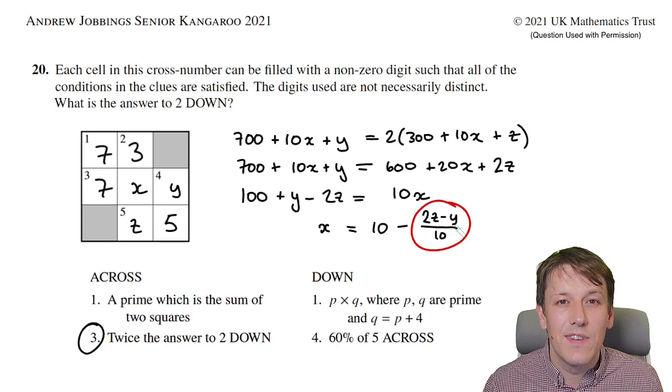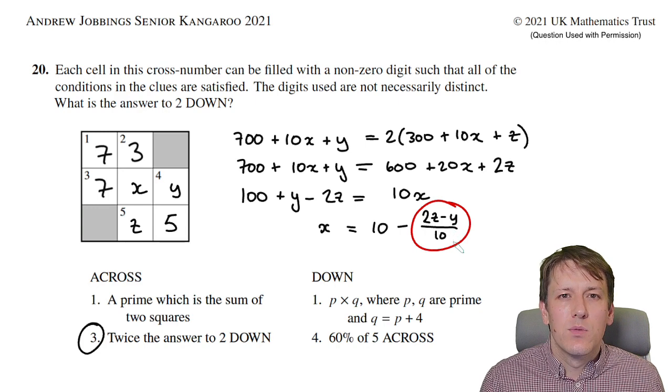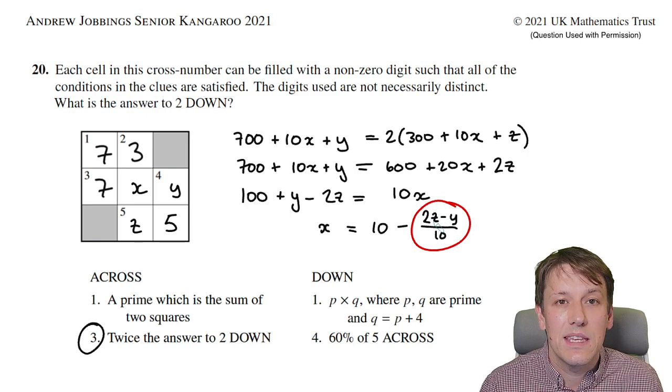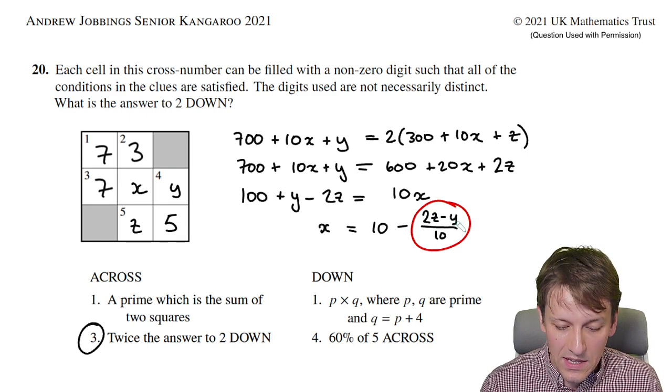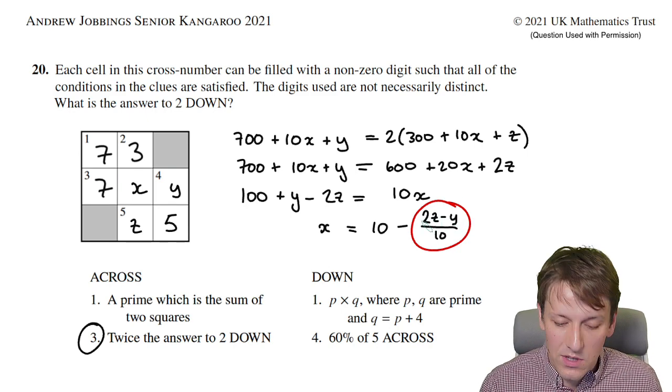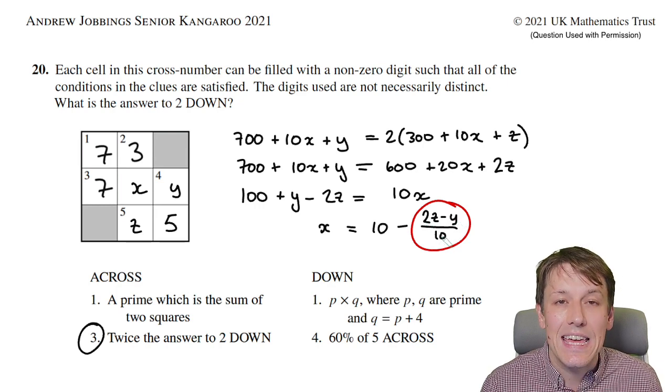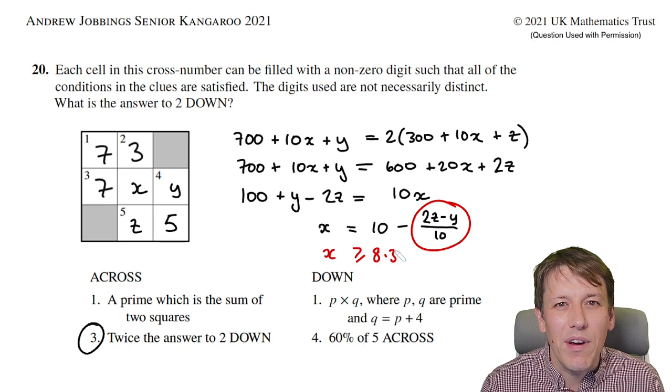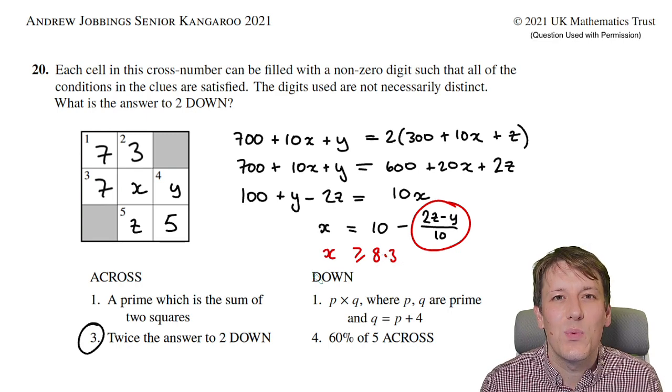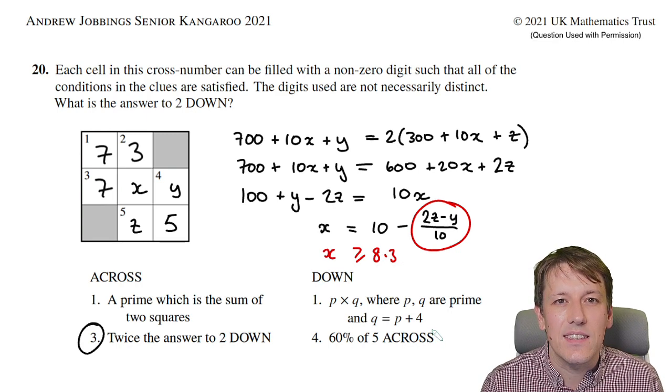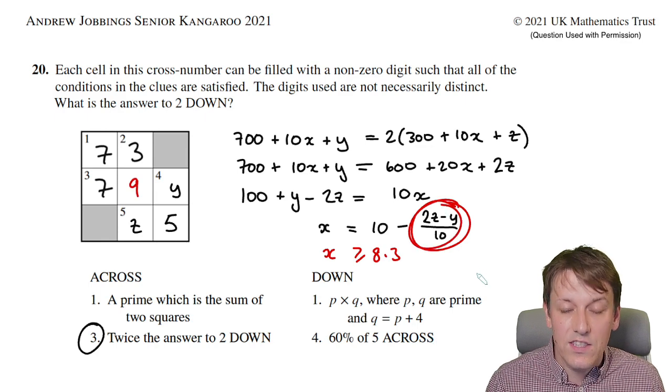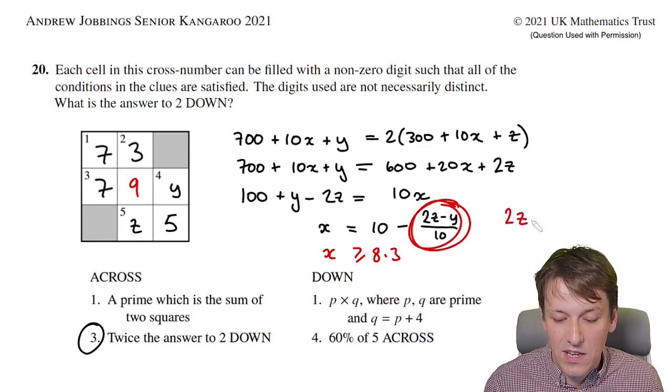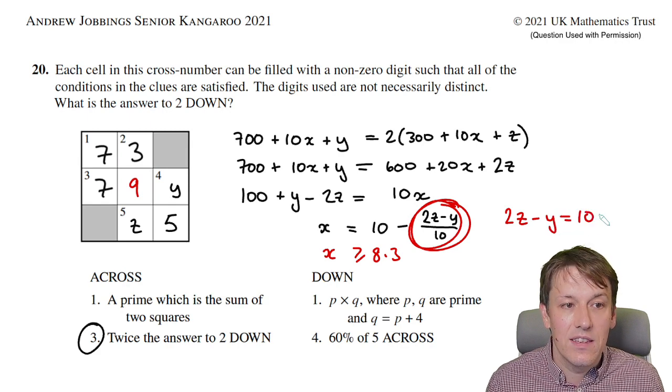Now let's think about the largest value this term can take. Since y and z are both non-zero digits, the largest z can be is 9 and the smallest y can be is 1, so at most this could be (18 minus 1) over 10, which is 1.7. So x must be at least 8.3, but x is also a digit, so x must equal 9. That means this term must equal 1, so 2z minus y equals 10.